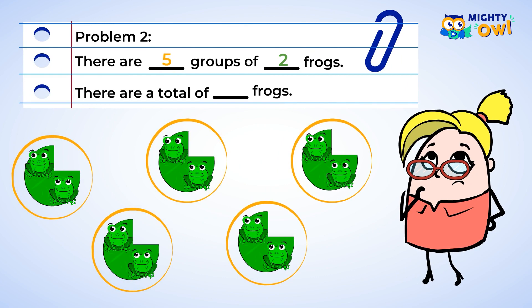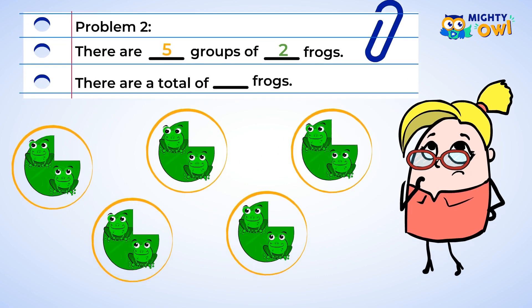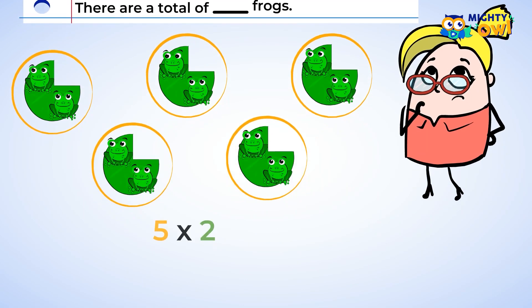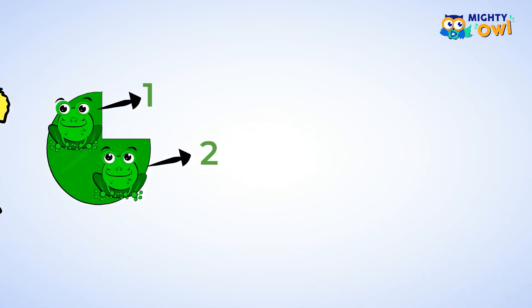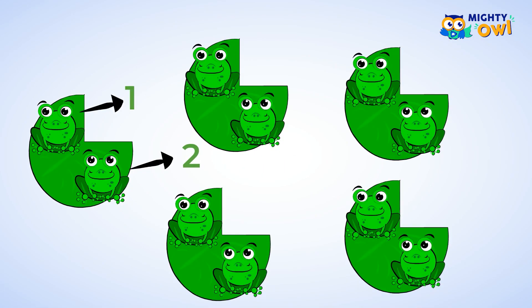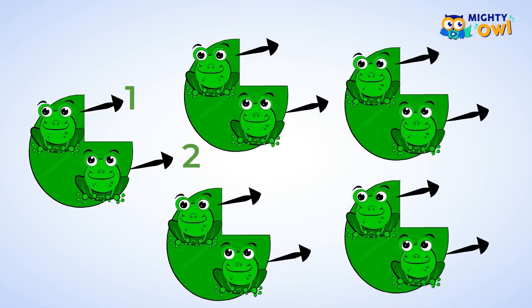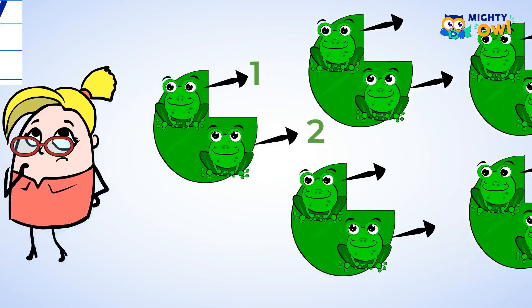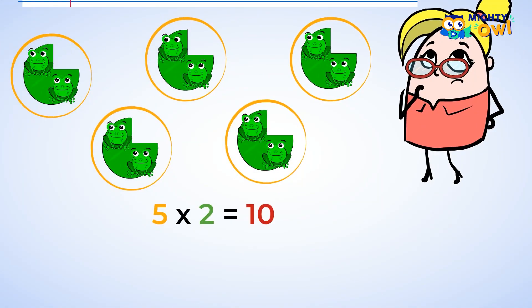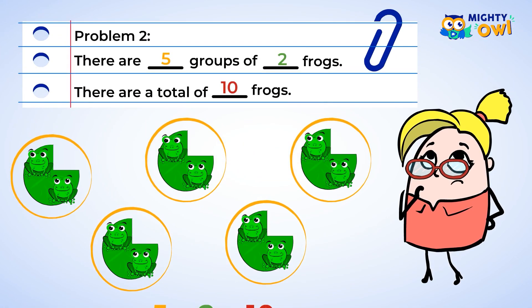You now have five groups of two frogs. To find how many total frogs there are, you can write five groups of two as five times two. You can count the frogs or use skip counting to find that five groups of two is a total of ten. The answer is there are a total of ten frogs.